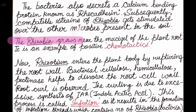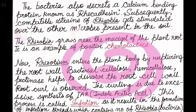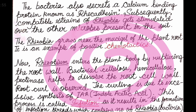The host plant, which is a leguminous plant, secretes three key chemical signal molecules: Lectin, Homoserine, and flavonoids. These three chemical signals secreted by the host plant attract the Rhizobium bacteria toward the root zone.